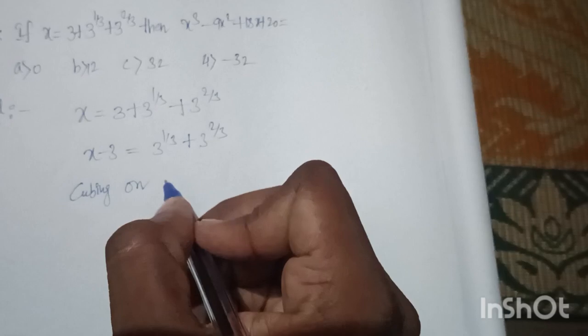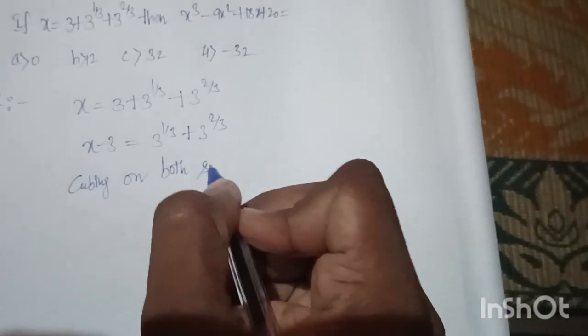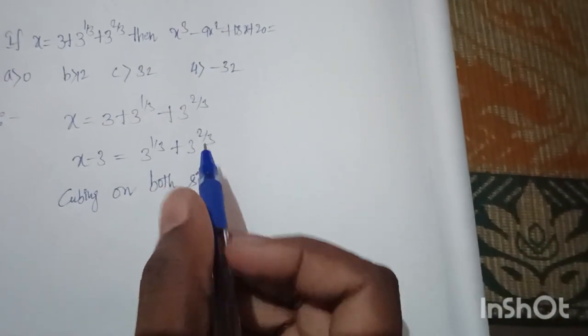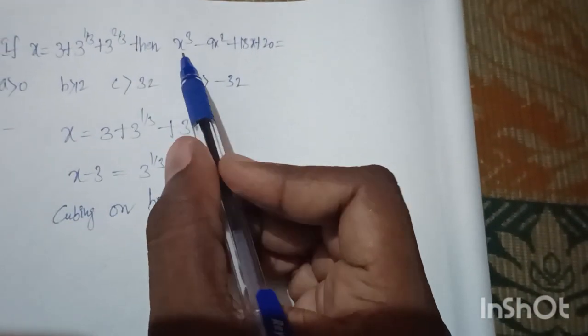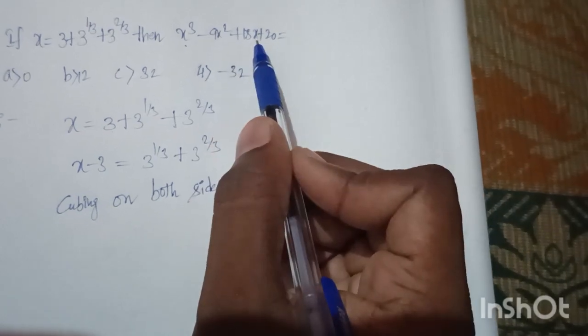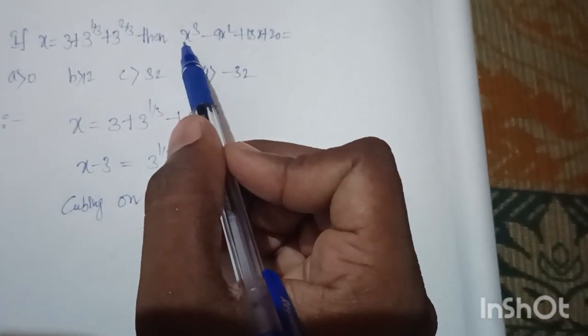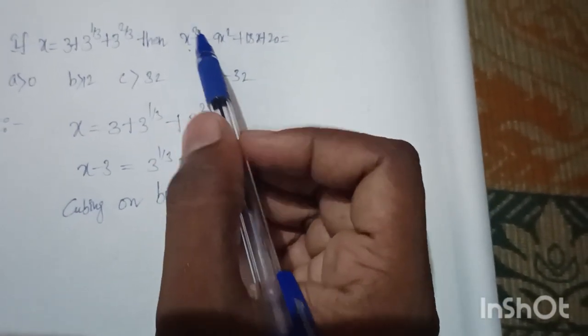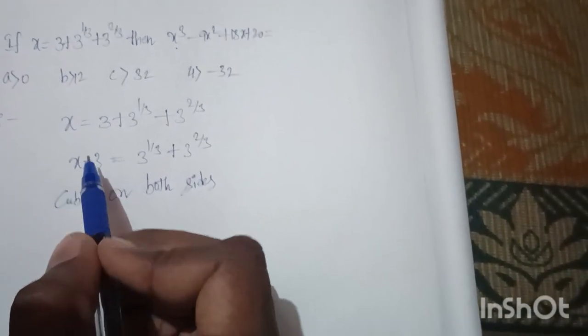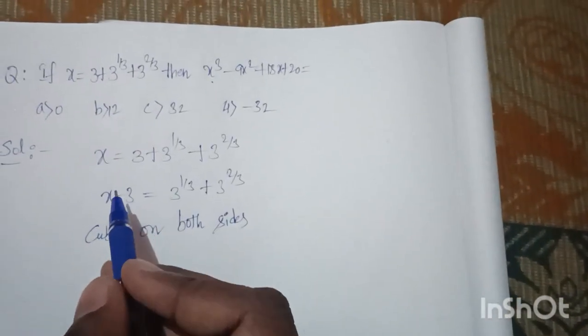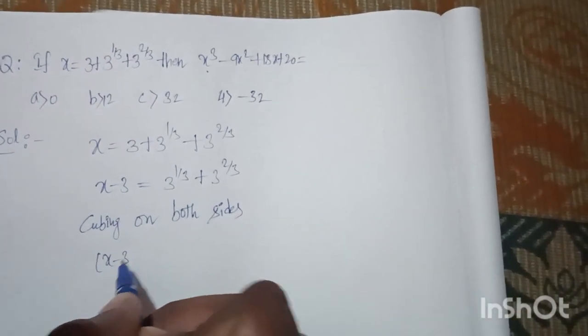Now just apply cubing on both sides. The reason I am applying cubing on both sides is — if you observe the question, what we need to find is x³ - 9x² + 18x + 20. It has an x³ term, so by cubing both sides I may get the x³ term on the LHS.